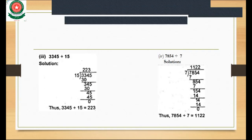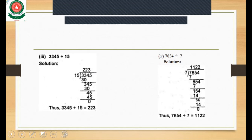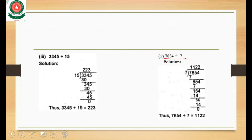Some students had a problem, so let me see part 4 again. The question is 7854 divided by 7. We place 7854 inside the bracket and 7 outside. The divisor has only one digit, so we take one digit at a time.